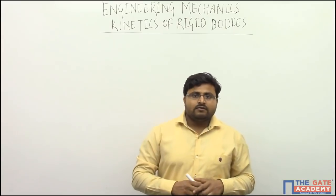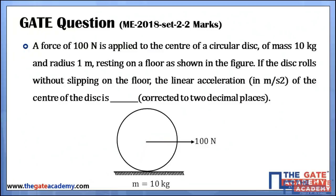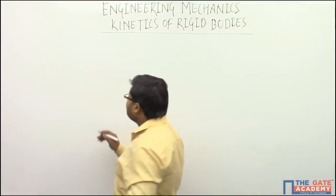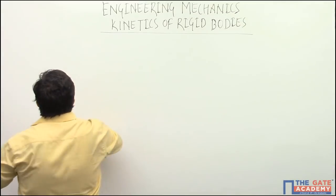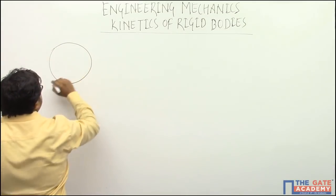On your slide you can see: a force of 100 Newton is applied to the center of a circular disc of mass 10 kg and radius 1 meter, resting on a floor as shown in the figure. If the disc rolls without slipping on the floor, the linear acceleration in meters per second squared of the center of the disc is what we have to determine.